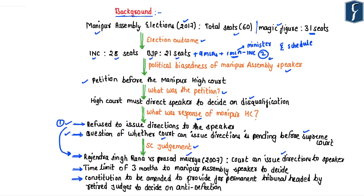On the second question — whether this MLA should be disqualified — the Supreme Court stated it cannot decide, as the power is vested in the Speaker under the Constitution. However, since no time limit is imposed on the Speaker to decide, this is being misused, as seen in Manipur. The Supreme Court directed that the Manipur Assembly Speaker must decide on the disqualification of this MLA within three months.